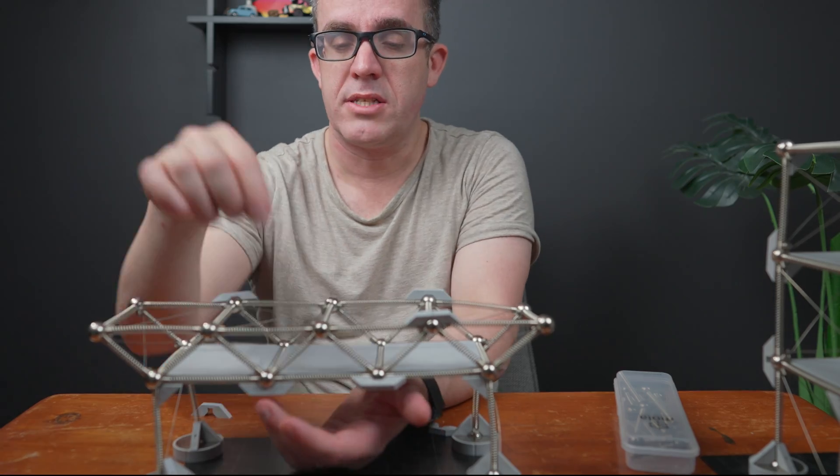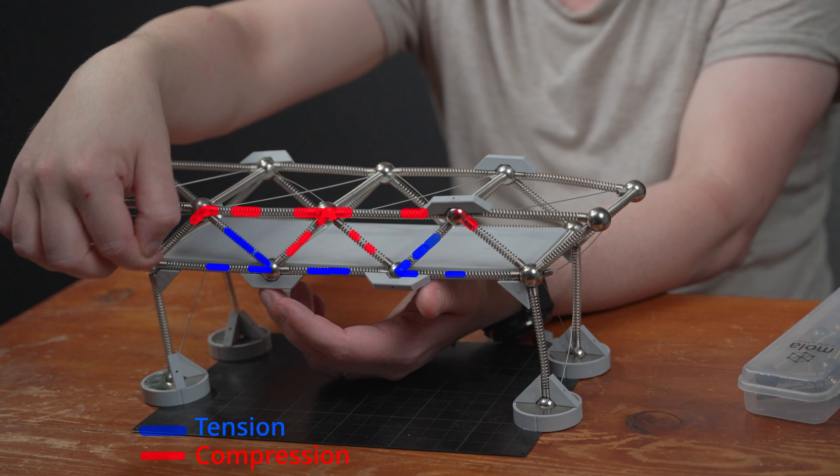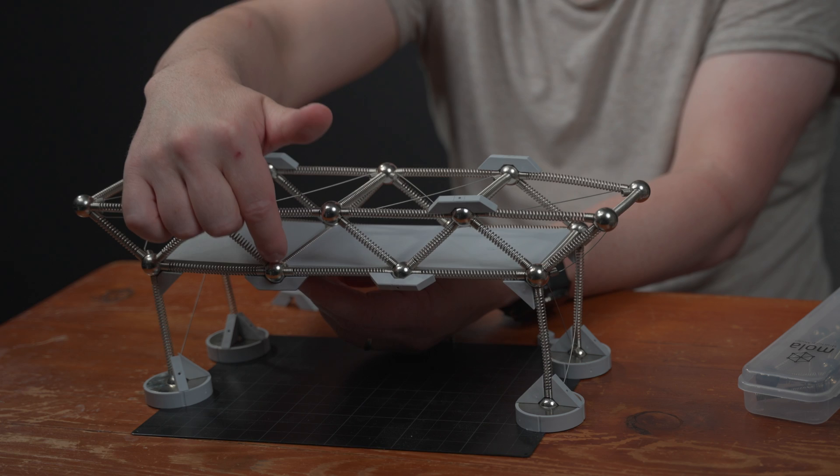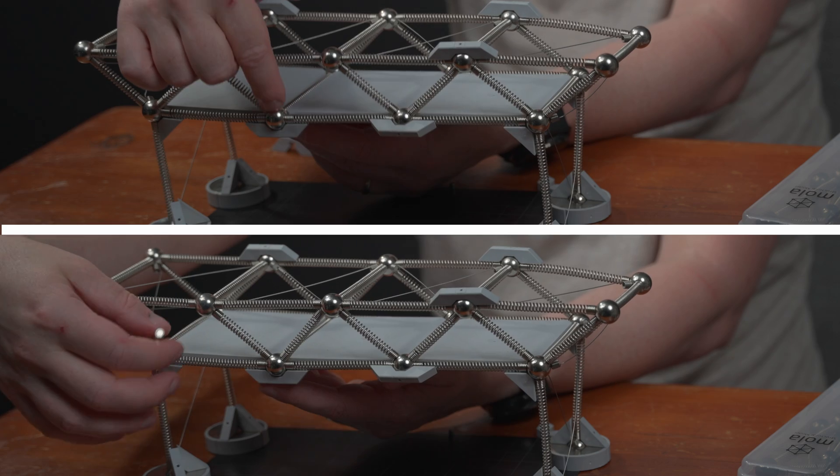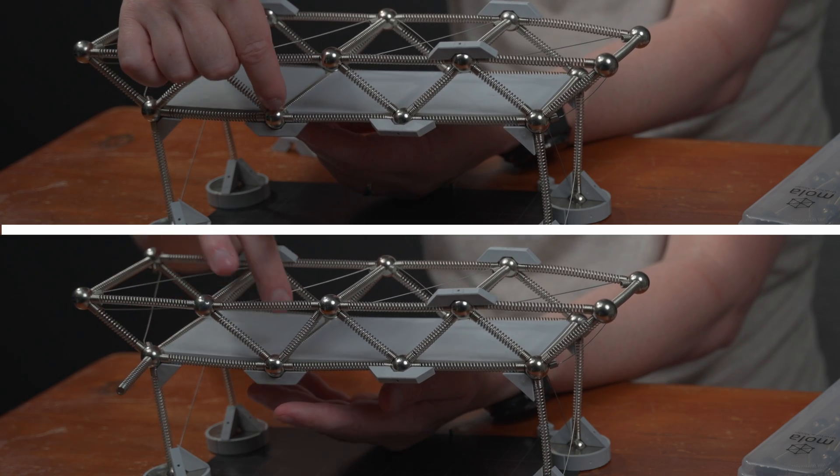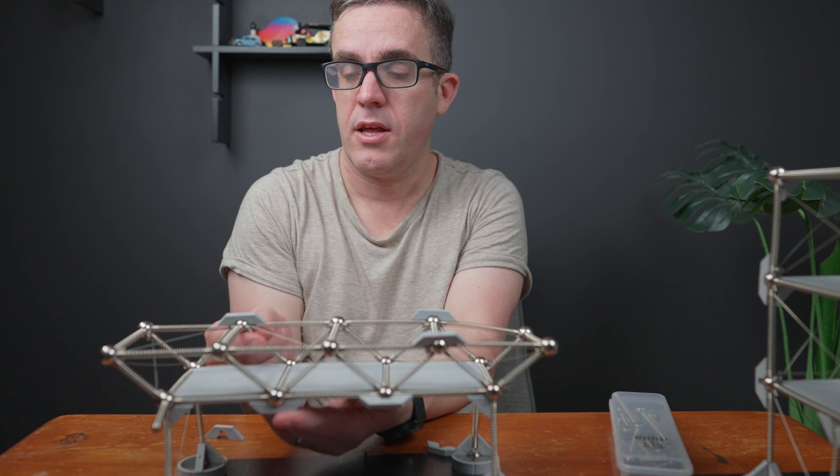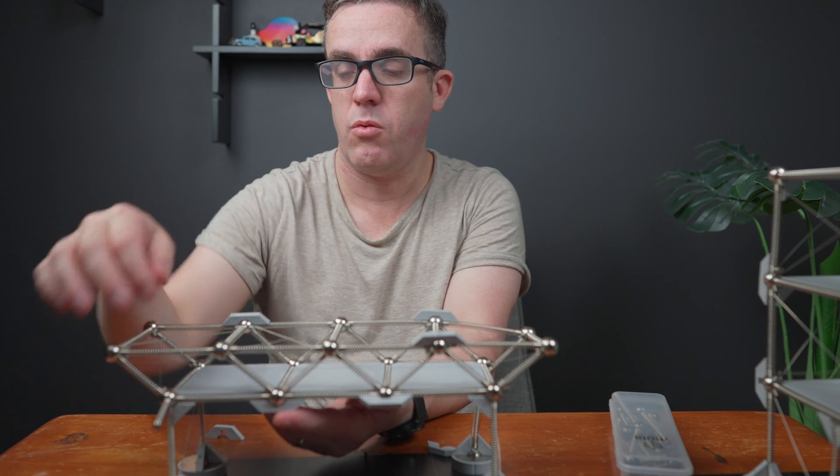This member here is super critical because the tension forces are coming up and over and down. We got a little bit more robustness here where if we hit this one we don't see that failure. Just a light touch led to the catastrophic collapse. We can tell which members are the most critical.